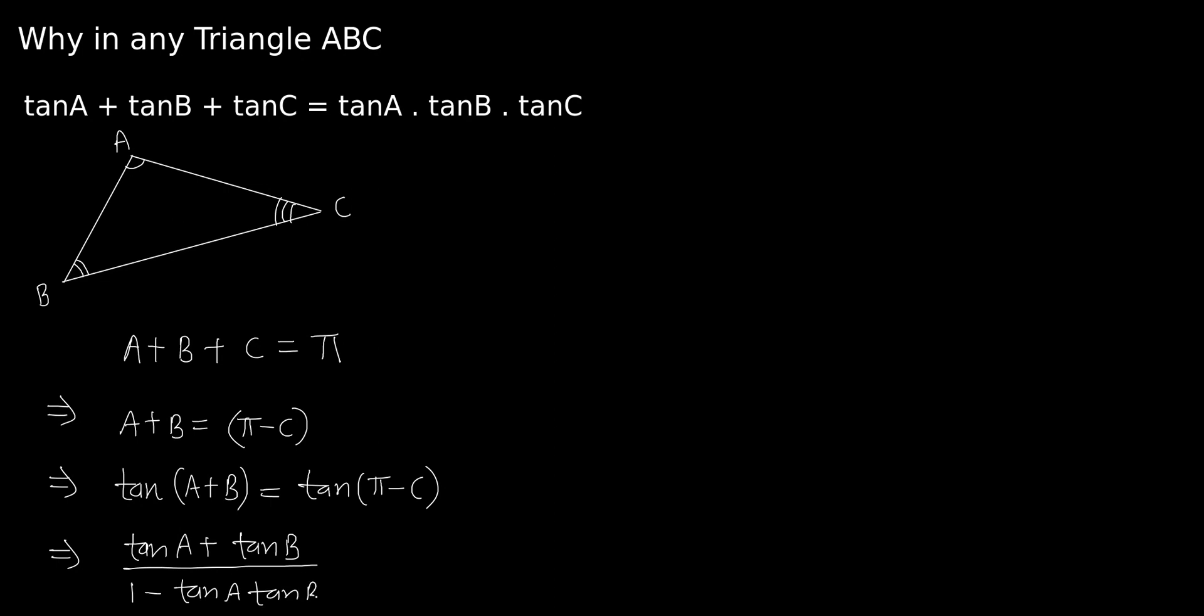This equals tan(π - C). The angle π - C is in the second quadrant, less than 180 degrees, and tan of a second quadrant angle is always negative. So it becomes -tan C because for 180 degrees tan remains tan, and this angle is in the second quadrant, so tan of that angle will be negative.